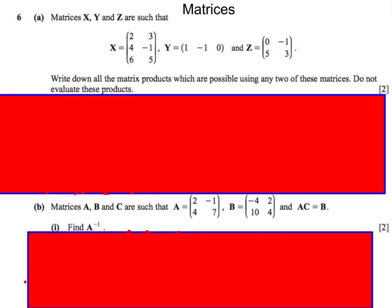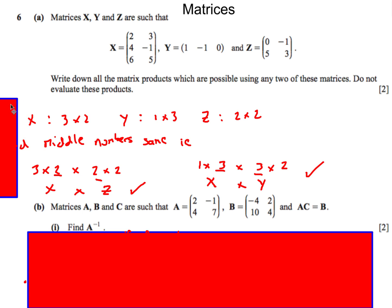Here's the first question. It gives us matrices X, Y, and Z, and asks which matrix products are possible. We don't have to evaluate them — just check dimensions. X is a 3 by 2 matrix. Y is a 1 by 3 matrix. Z is a 2 by 2 matrix. To multiply two matrices, the middle numbers must match. X times Z works because X is 3 by 2 and Z is 2 by 2 — the middle number is 2 in both. The result would be a 3 by 2 matrix.